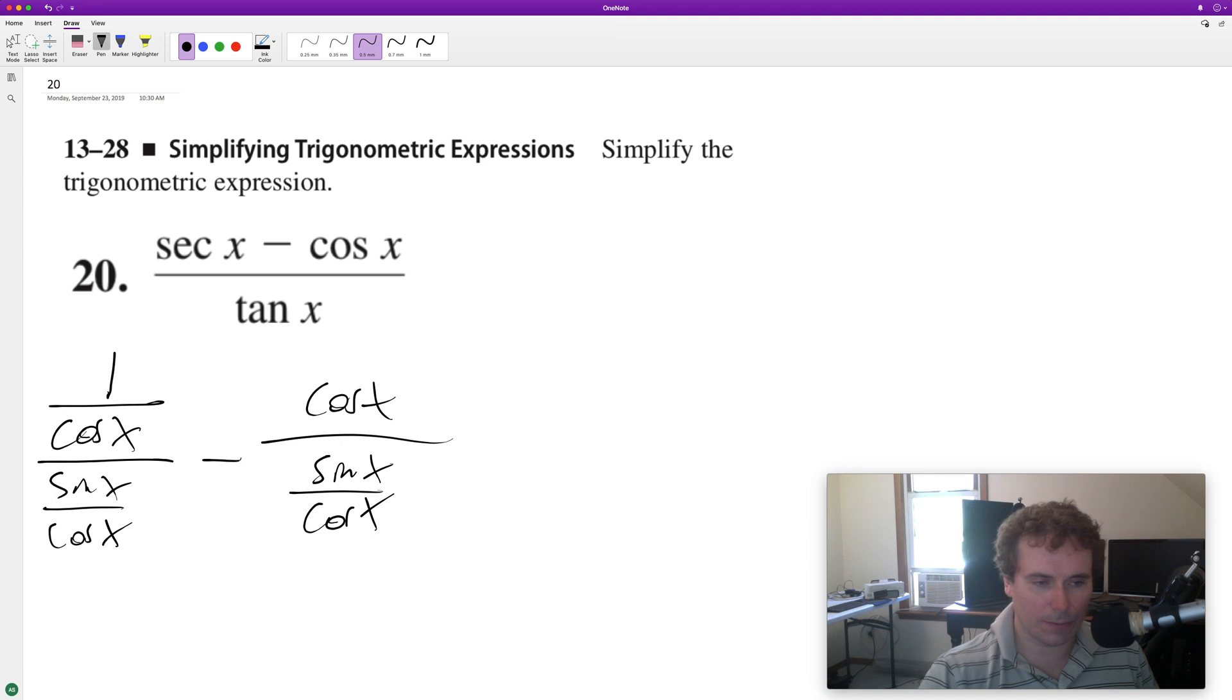When we divide by something, we can multiply by our reciprocal: one over cosine of x times cosine of x times sine of x. Cosine of x cancels out, and then over here minus cosine of x times...